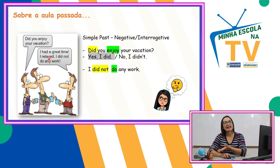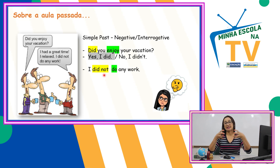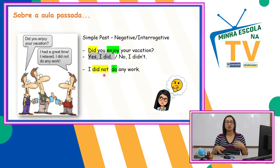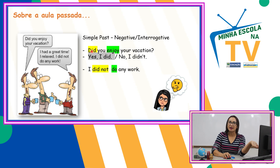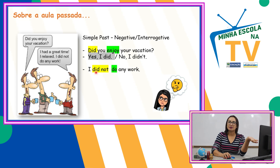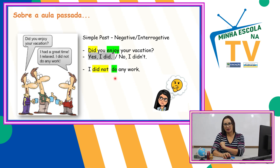Aqui tem a resposta: I had a great time. I relaxed. I did not do any work. Na negativa, você vai usar o Did com o Not, que pode ficar junto — didn't. E lembrando: quando você usa o Did na pergunta ou na negativa, o verbo principal fica no infinitivo sem o To. O Enjoy está sem ED. Não pode ter ED porque eu estou usando o Did na pergunta. Na negativa, o Do está no infinitivo sem o To porque eu estou usando o Did do lado.